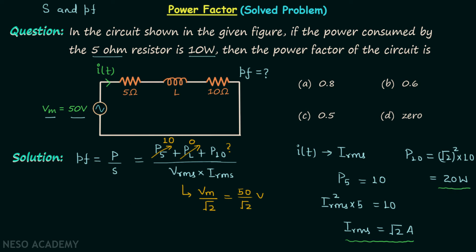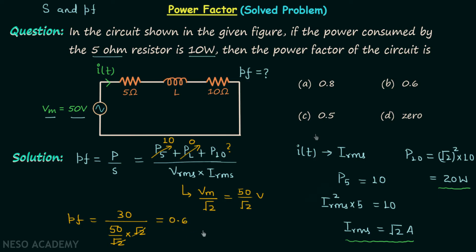The power factor equals the average power divided by the apparent power: 10 plus 0 plus 20, which is 30, divided by VRMS times IRMS, which is 50 over root 2 multiplied by root 2. The root 2 terms cancel, giving us 30 divided by 50, which equals 0.6. So option B is the correct answer.